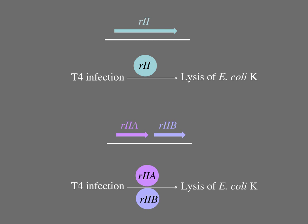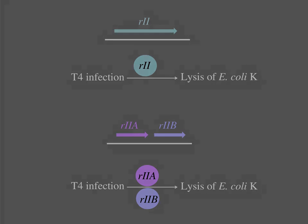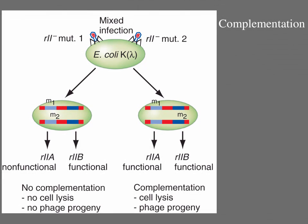However, another possibility is that two separate genes, R2A and R2B, exist, each of which makes a different protein, and both of which are required for growth on E. coli K. In this case, some of Benzer's R2 mutant strains would have mutations in the R2A gene and others in the R2B gene. To figure out how many R2 genes were mutant in his phage strains, Benzer performed a complementation test.